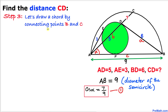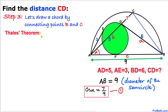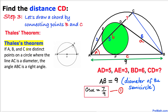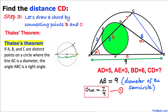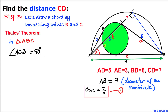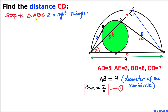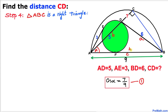Next, let's draw a chord by connecting points B and C. Now let's recall Thales' theorem: if A, B, and C are points on a circle where AC is a diameter, then angle B is 90 degrees. Therefore in triangle ABC, angle C is 90 degrees according to Thales' theorem, making triangle ABC a right triangle where AB is the hypotenuse.